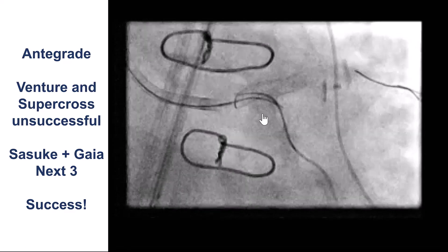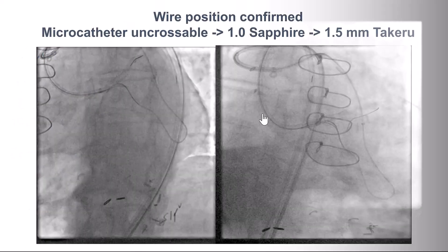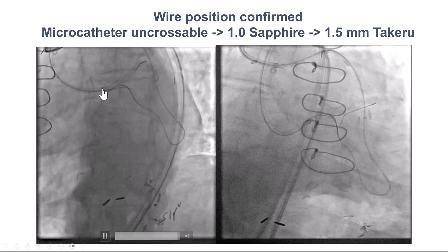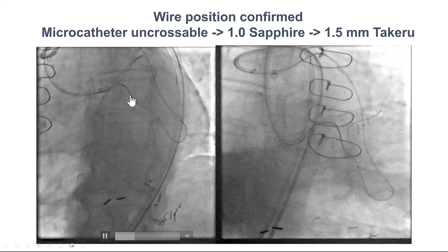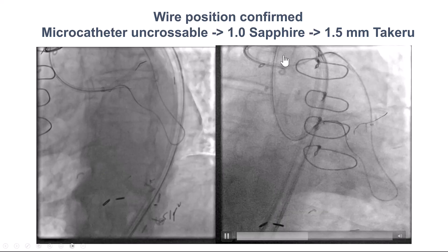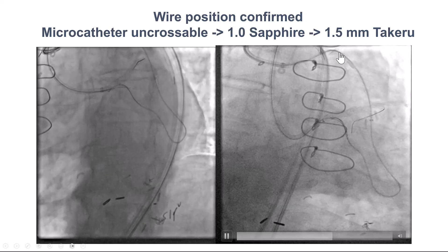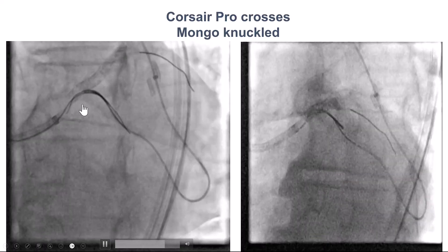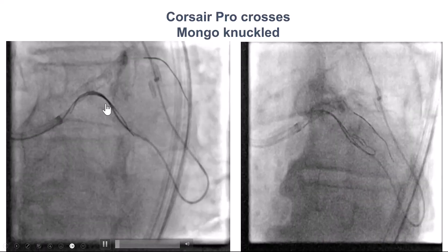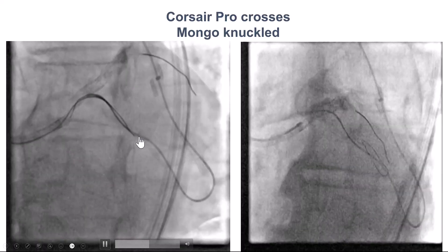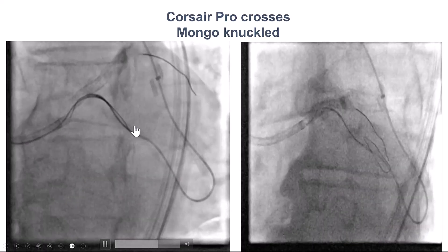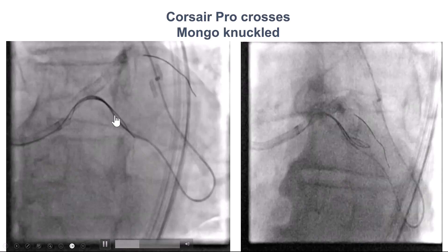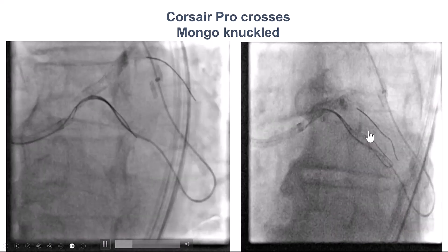This took a lot of time, persistence, and multiple wires. The microcatheter could not cross into the circumflex, so we used small balloons, and after doing that, we were able to advance the Corsair inside the circumflex, knuckle the Mongo, and now we have overlapping wires in the extraplaque space into the circumflex — a very good development.